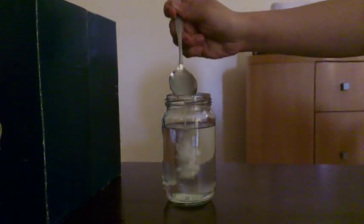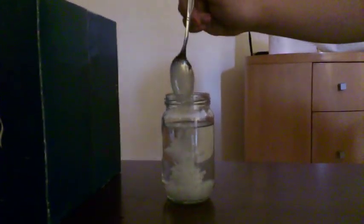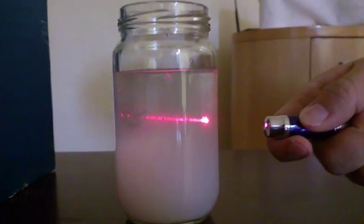Next, we add a spoonful of milk solution into the water to form the colloid solution. As the milk settles in, the path of the laser beam is now clearly visible.